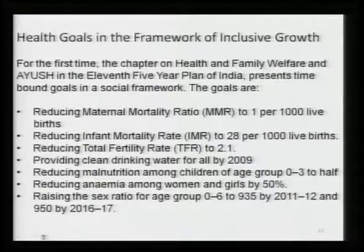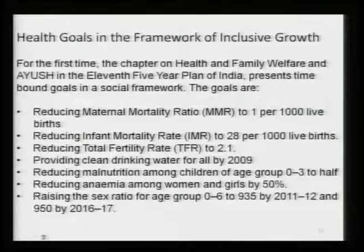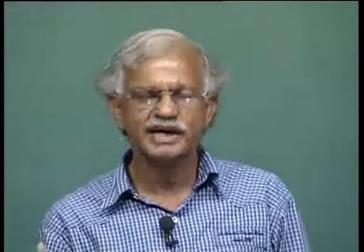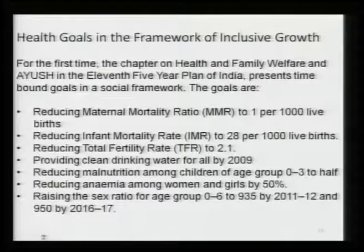Anemia is a very serious problem — more than 50 percent of women in the country are anemic, which leads to complications like postpartum hemorrhage and is a major cause of high maternal mortality ratio. Then, raising the sex ratio for the age group 0 to 6 — the juvenile sex ratio — to 935 by 2011-12. If the efforts of the state and NGOs have resulted in any success, we expect the 0-to-6 sex ratio to improve close to 935 by 2011 or 2012 and 950 by 2016-17.